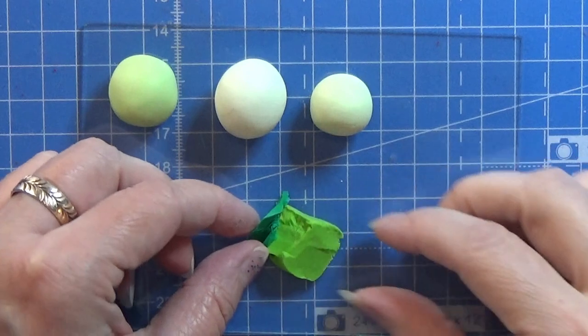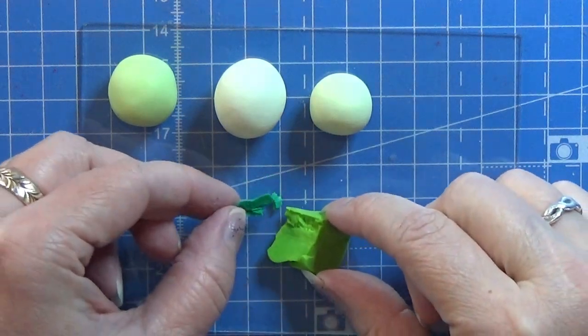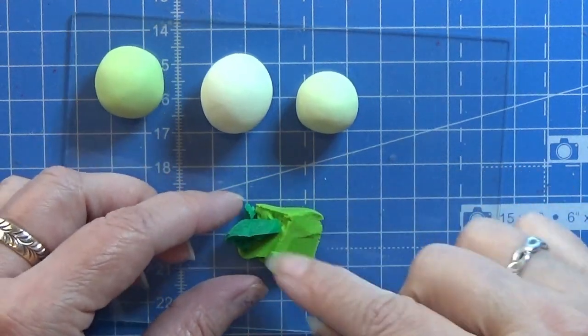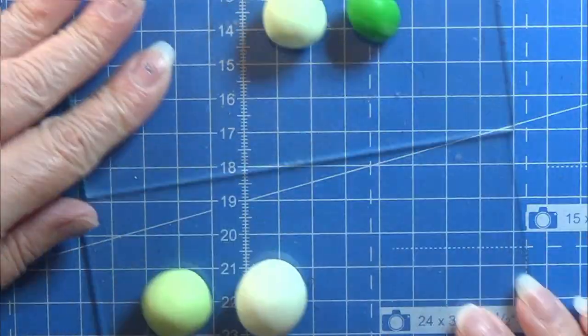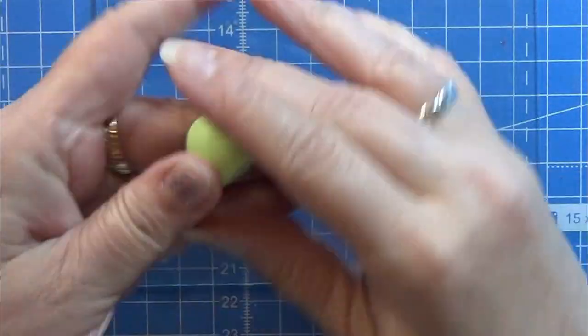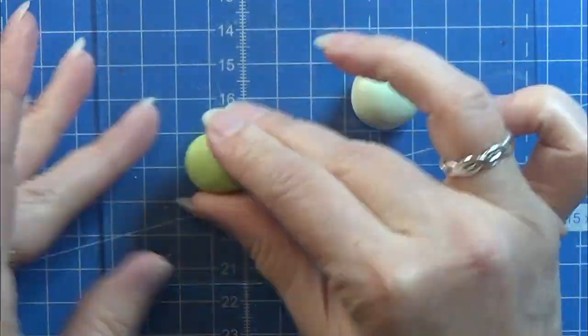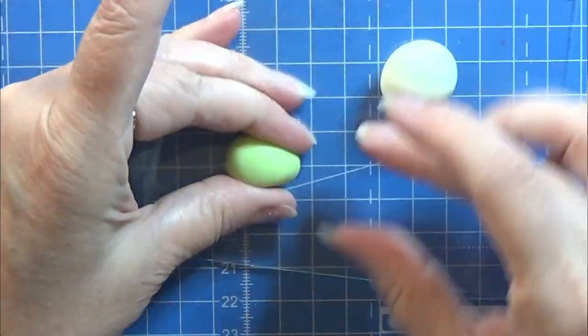Then I am taking some light green and a tiny bit of dark green and I am mixing that together, and I'm getting the color that I just put away here. Now let's get started with this cane.